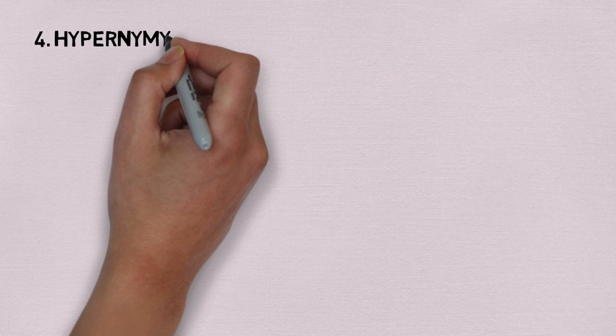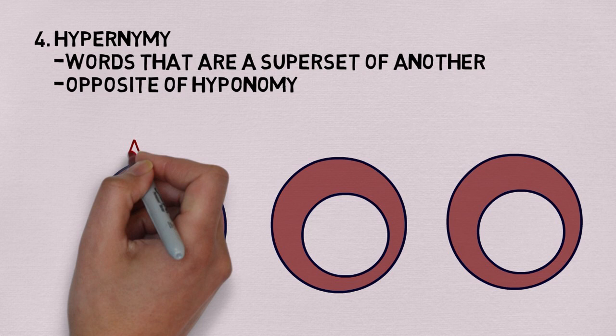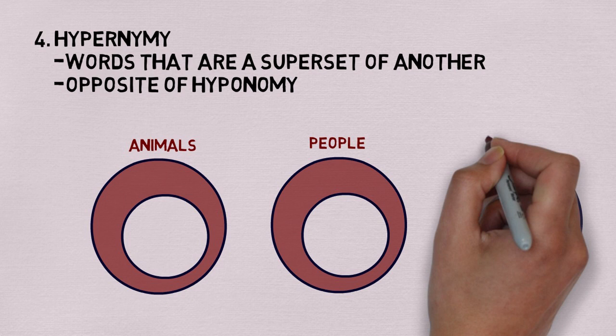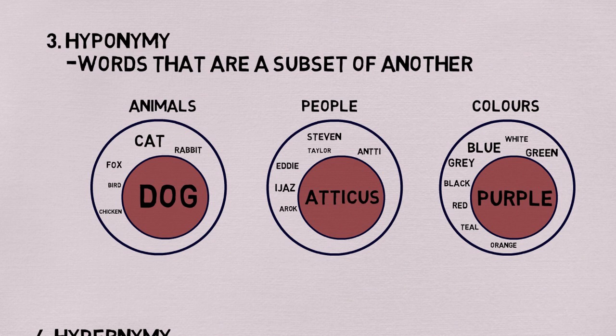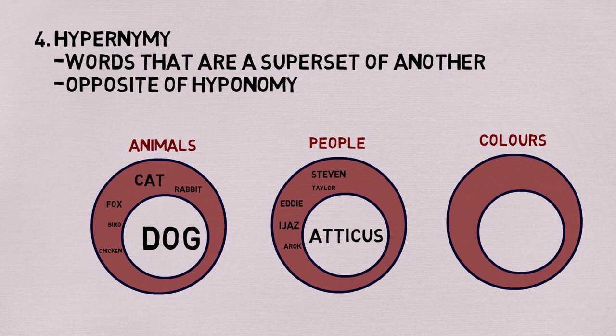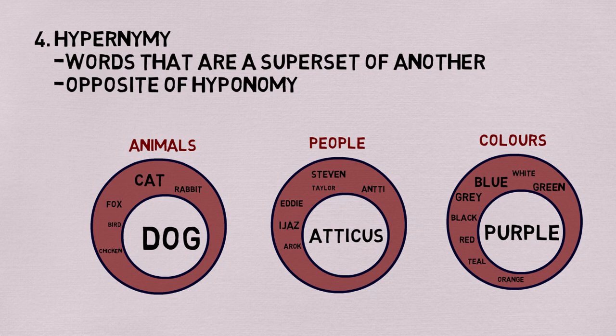On the flip side, we have hypernymy as our fourth lexical relation. Hypernymy can be thought of as the opposite of hyponymy — it describes a word that is a superset of another. Animal is a hypernym of dog because dogs are a type of animal. Human is a hypernym of Atticus because Atticus is a type of human. Color is a hypernym of purple because purple is a type of color. Be careful, because hyponymy and hypernymy differ only by one letter — in a test situation, writing one when you mean the other will cost you marks as they are actually opposite situations.